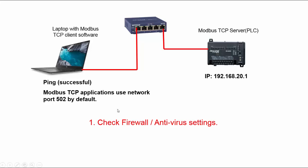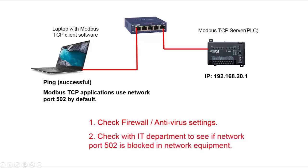The firewall settings especially will automatically block port 502 by default. If port 502 is blocked, a ping would still take place because ping does not use network port 502, but Modbus TCP communication would not. If the firewall settings are fine, I then ask them to check with the IT department to see if network port 502 is blocked in any network equipment.